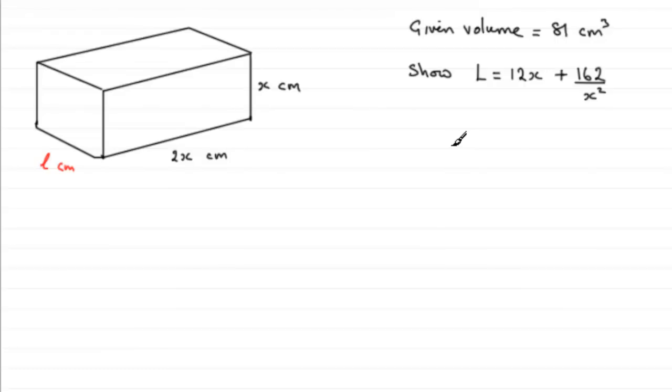Let's put this as a result. We need to make L the subject, so what we could do is say that L equals 81 divided by 2x squared. That gives us a good starting point. We'll call that equation 1.